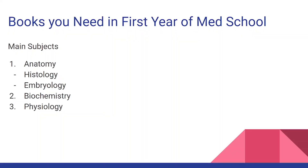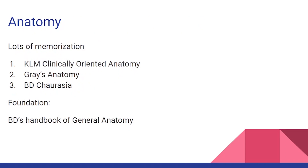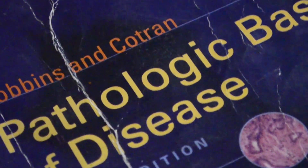We're going to start with the first five subjects: anatomy, histology, embryology — those fall under anatomy — and then biochem and physio. Supplementary subjects at universities like Dow and CMH, and many private universities, include pathology, microbiology, behavioral science, community medicine, and pharmacology. They don't put a lot of heavy pressure on these subjects — they just form a foundation, so you're lightly touching them, not going very deep.